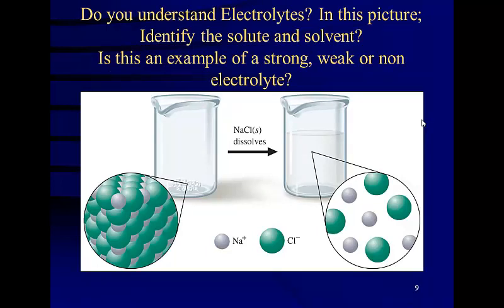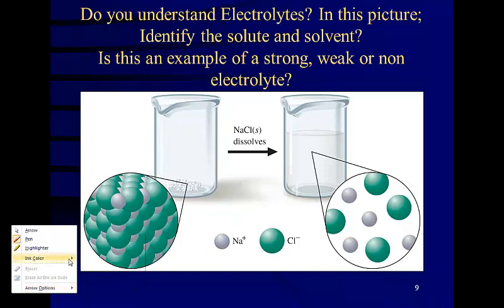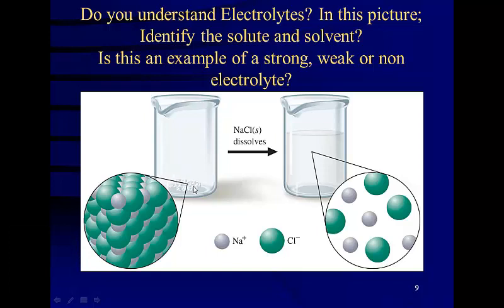Do you understand electrolytes? In this picture, identify the solute and the solvent. Is this an example of a strong, weak, or non electrolyte? For example, notice this is a salt. This is an ionic compound. All ionic compounds are referred to as salts. This one happens to be sodium chloride. So before we add water, this is the solute alone.